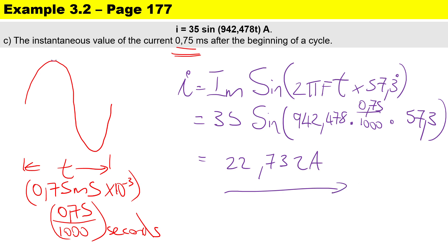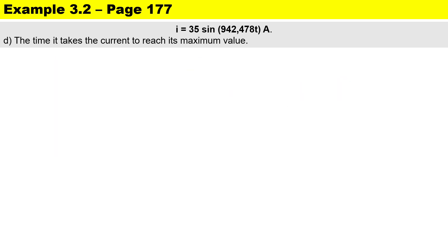Just a reminder: the maximum value im is 35 amps, so our instantaneous value of 22.732 amps will appear somewhere along the rising portion of the waveform. Next is question D: the time it takes for the current to reach its maximum value.